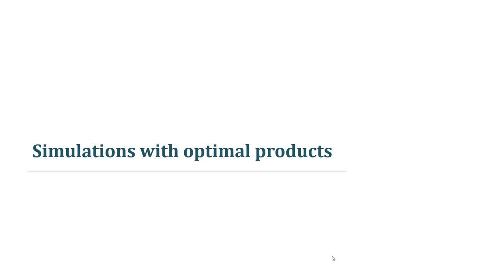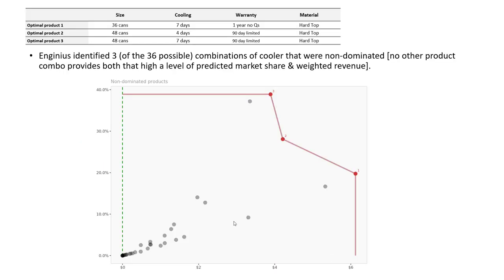Now that we've seen what the model predicts people will purchase before we introduce our new product, let's see what happens when we consider introducing new products into the market. Among these 36 possible combinations, InGenius identified three optimal products that were non-dominated. When we talk about domination here, we're talking about trade-offs between incremental revenue and overall market share.